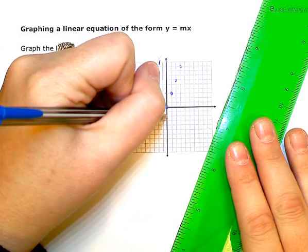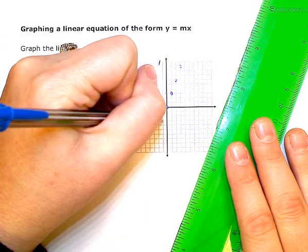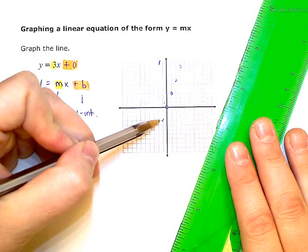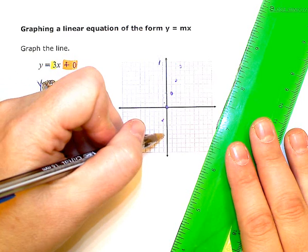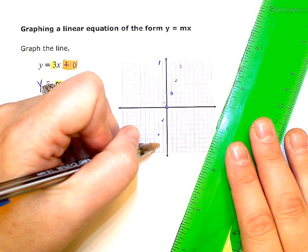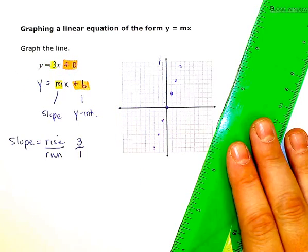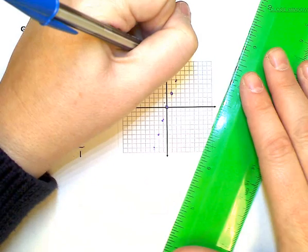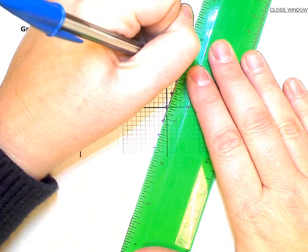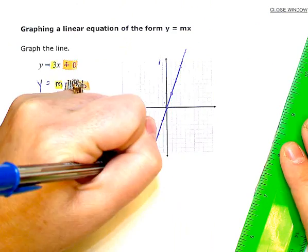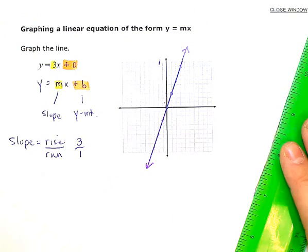I can even go backwards and reverse it both directions. So down 3, back 1, down 3, back 1. As many times as I want to to kind of line up enough dots that I can draw in a nice straight line. And that's my graph.